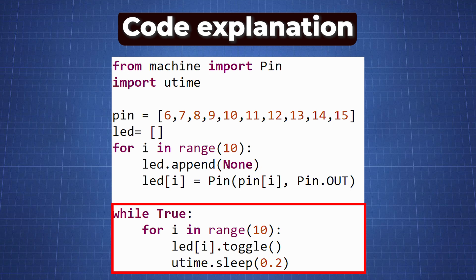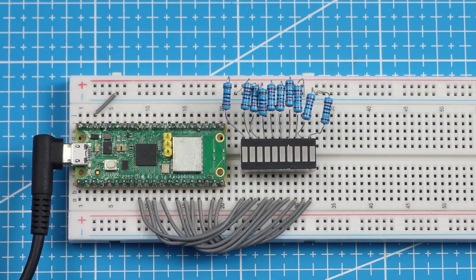This causes each LED to turn on and off in a sequence, creating a visual effect similar to a progress bar. We use utime.sleep(0.2) to pause the program for 200 milliseconds between each LED toggle, which controls the speed of the animation. Running the code, we get the following.